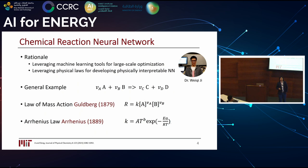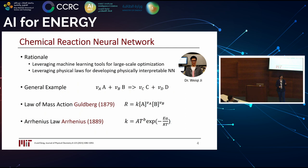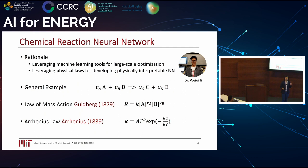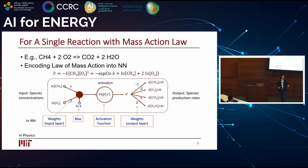Let me give a general example of chemical reactions. If we're dealing with reactions from A and B to C and D, the two fundamental laws are the law of mass action, which tells us how to approximate the reaction rate given species concentrations, and for combustion systems where temperature is important, the rate constant K is a function of temperature and activation energy — the Arrhenius law. If these are the fundamental laws that most chemical systems obey, we can incorporate them into the architecture of the neural network.